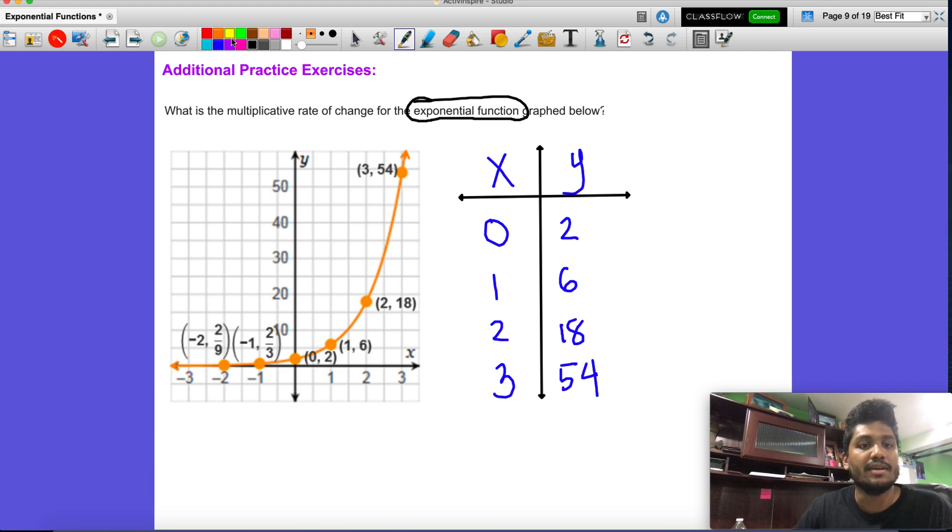All right, so now to get from 2 to 6, what do you multiply by? And that's gonna be 3. But does that work for them all?